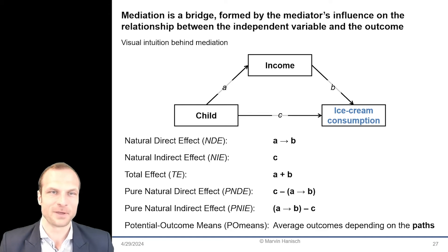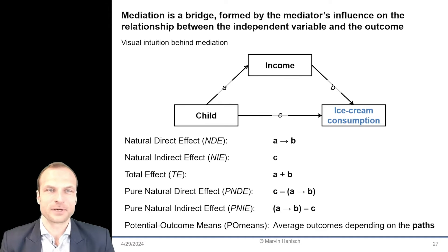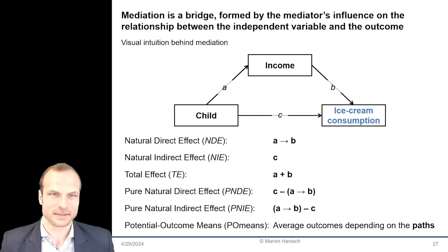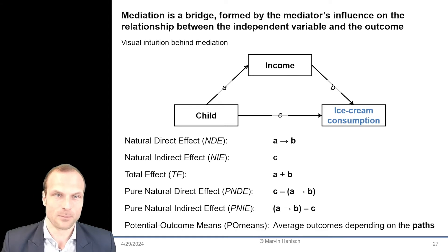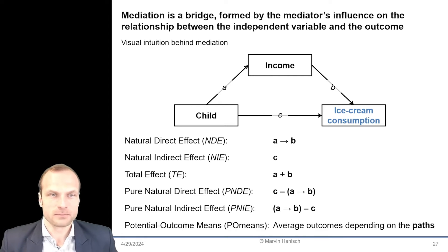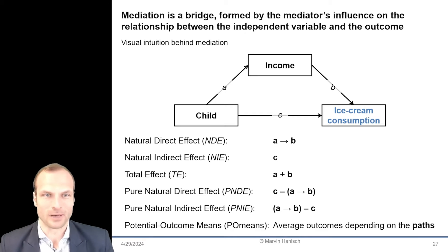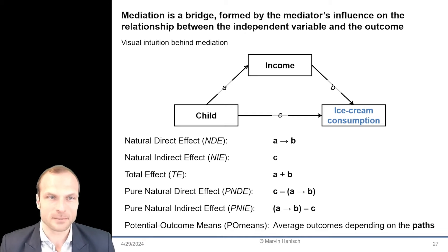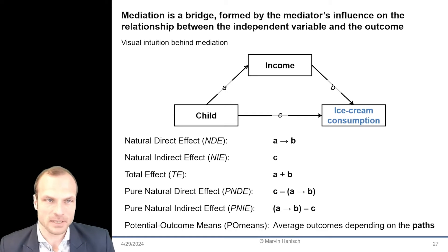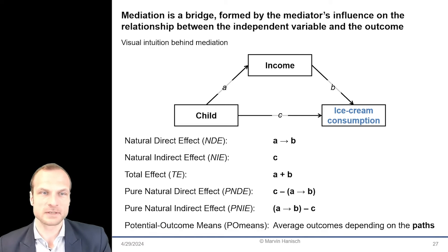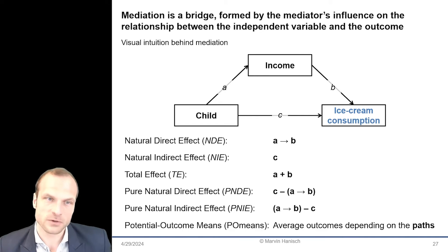Let's look at an example. Let's assume we have children and adults in our dataset, and children like ice cream more. Therefore, we would expect that they consume more ice cream. However, we could also take another route to our outcome variable, namely that children have less disposable income, which in turn influences the ice cream consumption. So there's that indirect pathway.